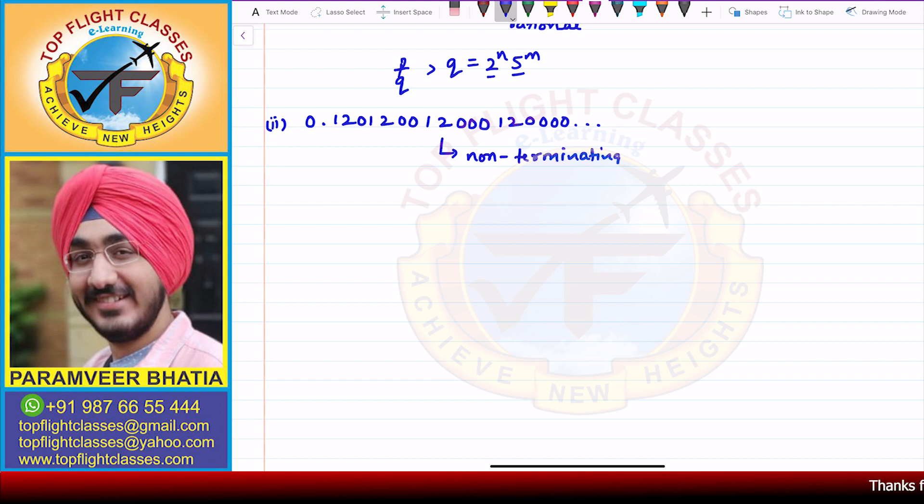And also, if you see clearly, every time there is an increase in the number of zeros, so therefore it is non-repeating as well. Now since it is non-terminating and non-repeating, in this case we can say that the number is not rational.